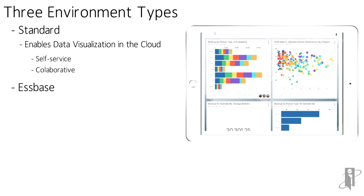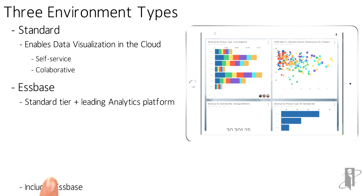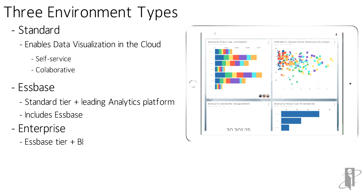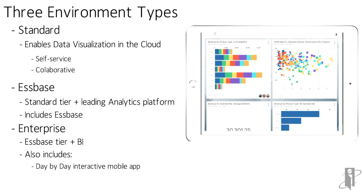The second version is called the Essbase version. It includes everything in the Standard edition and also includes Essbase, which is the leading analytics platform — I'm a little biased since I've been doing Essbase since about 1992. And then finally, you get the Enterprise edition, which gives you BI or business intelligence, and also includes DayByDay, an interactive mobile app, as well as what used to be called BI Publisher, now called pixel perfect reporting.